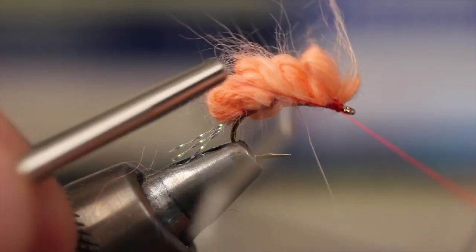Use a five or six turn whip finish to complete the fly and snip or cut your tying thread free.